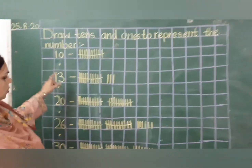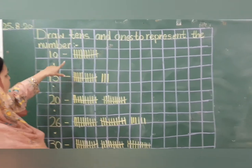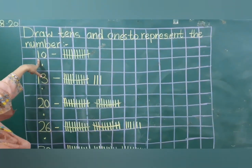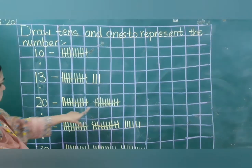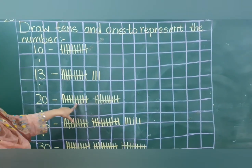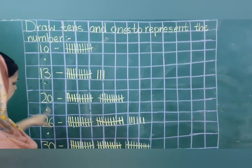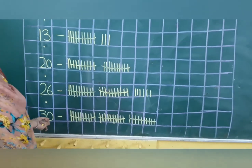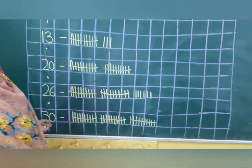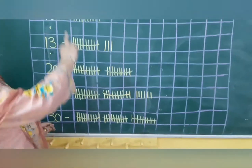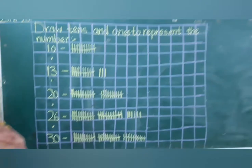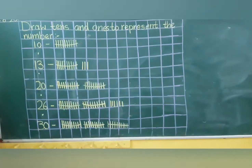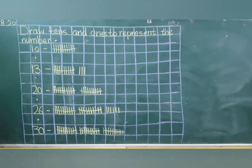You can do a quick recap: one bundle is equal to ten, two bundles twenty, three bundles thirty. So you have to do this exercise in your maths notebook.